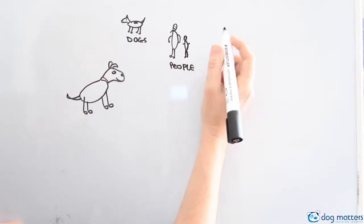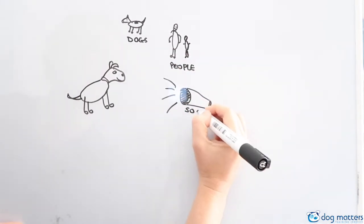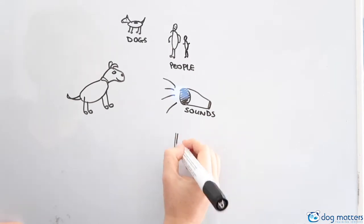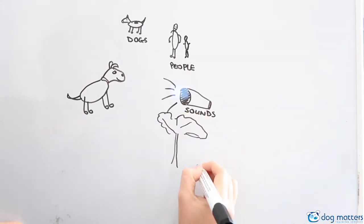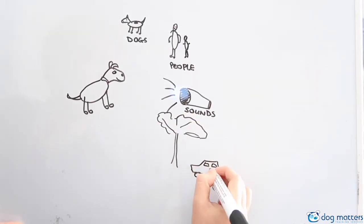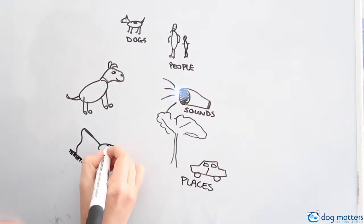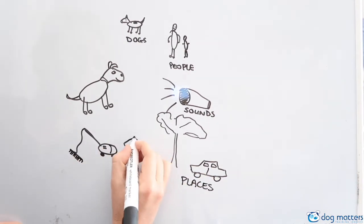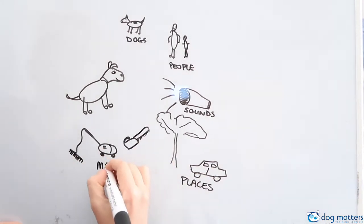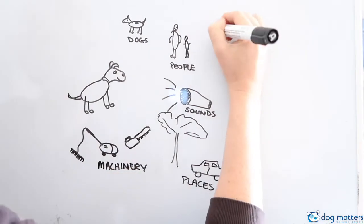Your puppy should also meet lots of people of different ages, races, sizes, different sounds, different environments. Potentially scary household items and machinery, that's a vacuum cleaner and a chainsaw by the way.